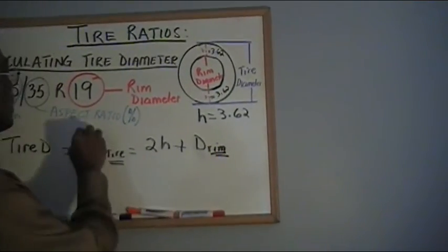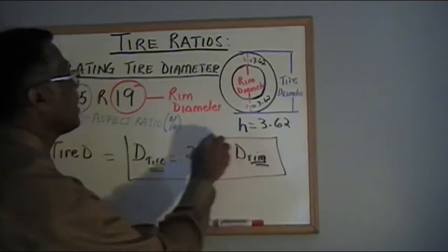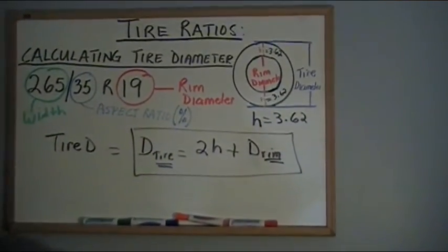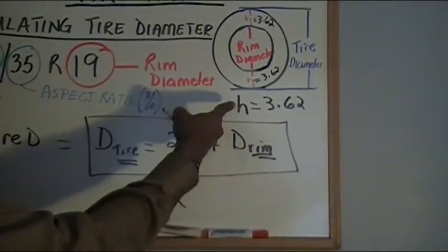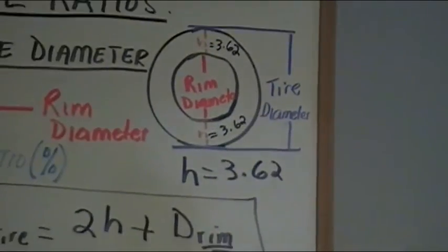This formula gives me the diameter of the tire. So for this tire, it's gonna be two times—I found before the tire height was 3.62—so 3.62...